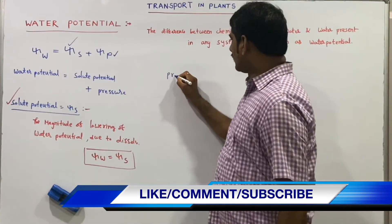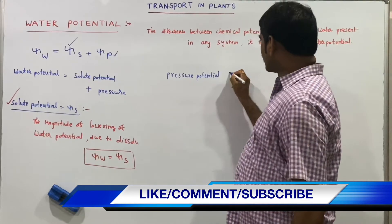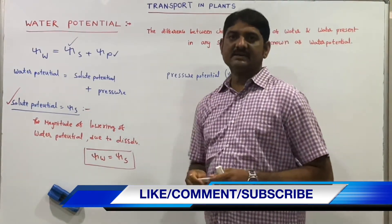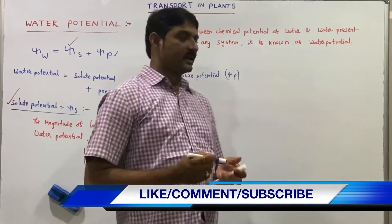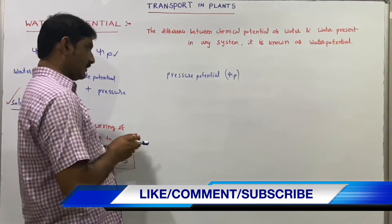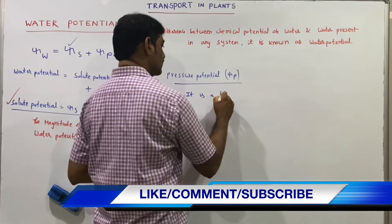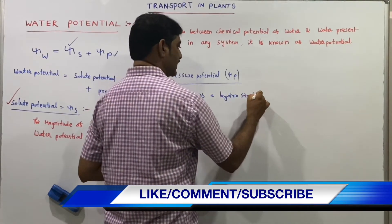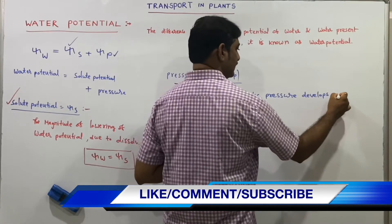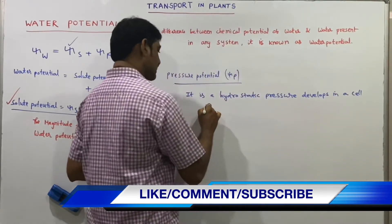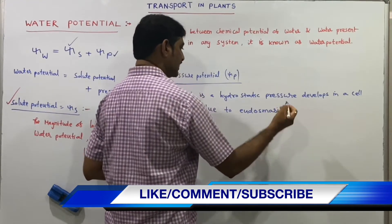Pressure potential (ψp) is the hydrostatic pressure that develops in a cell due to the entry of water by osmosis. This positive hydrostatic pressure that develops in a cell due to endosmosis is known as pressure potential, ψp.